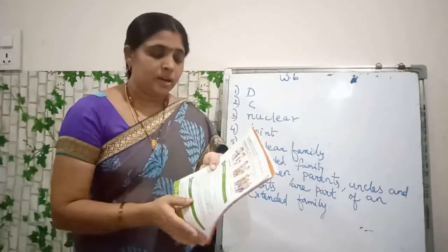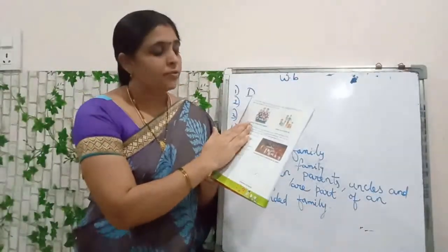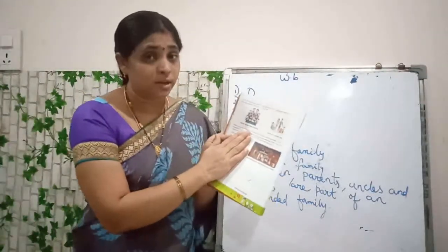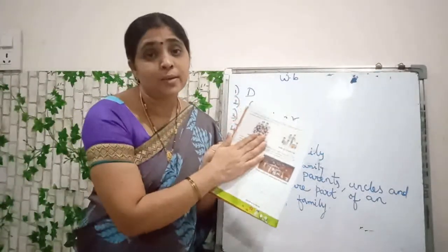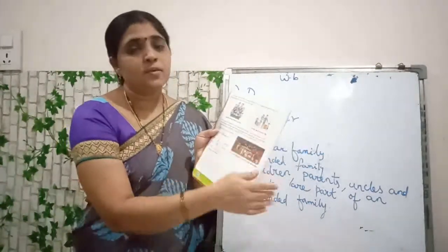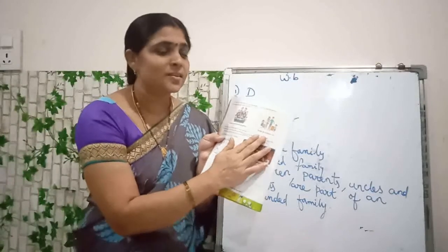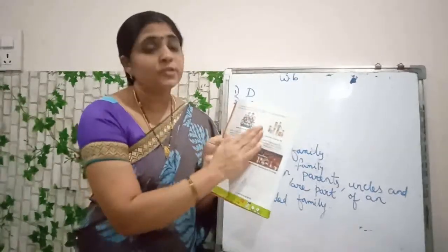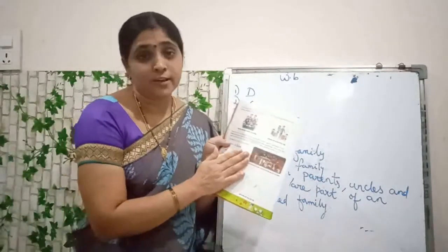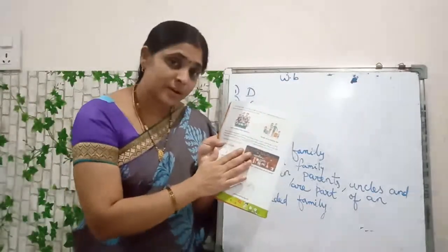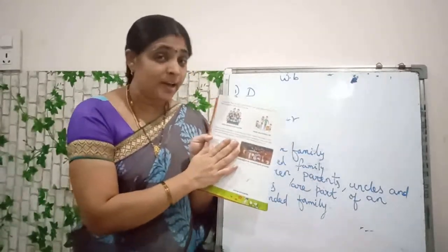Is it clear now? See these two pictures, children. What is this picture? Family having a meal together — all the family members are sitting together and having their meal. Next, all the family members are on a holiday trip, going somewhere together. Next, what is this? This is a festival. They are enjoying the festival. In festivals, all the family members meet together.